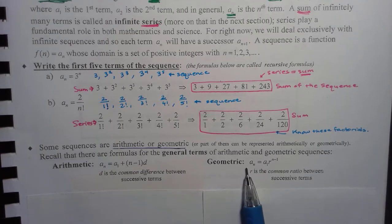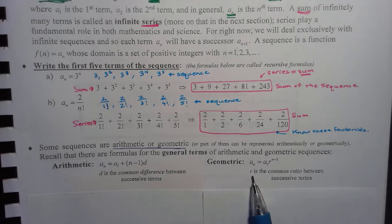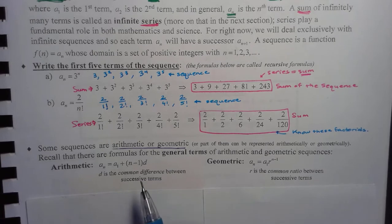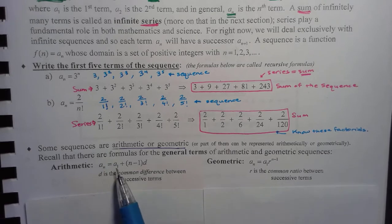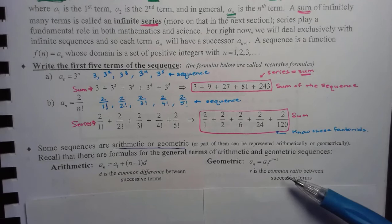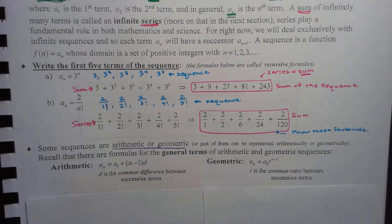A geometric sequence is found by A sub n equals A sub 1 times r to the n minus 1, where r is the common ratio — you divide the next term by the preceding term. Notice, like the arithmetic sequence, we have n minus 1, because for the first term you don't need a common difference or common ratio. For each subsequent term you do, so that's why it's n minus 1.